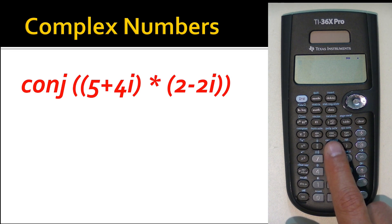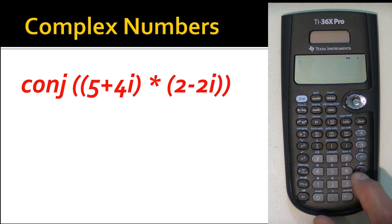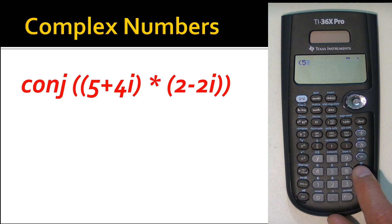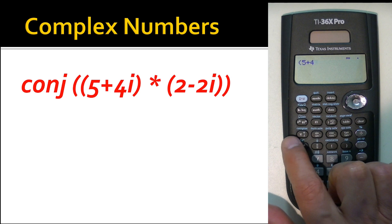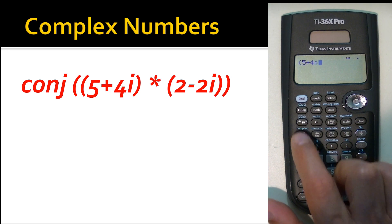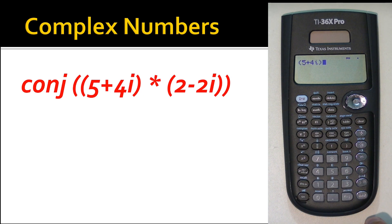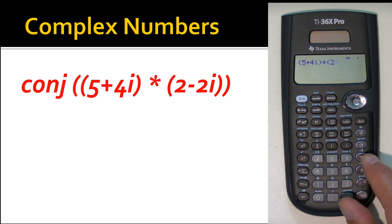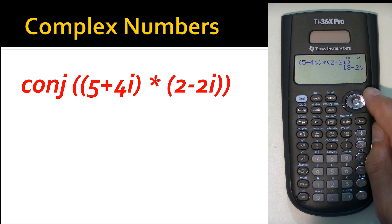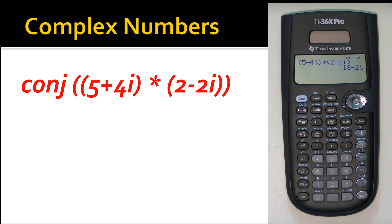Example: multiply (5 + 4i) by (2 - 2i). You don't need to activate a special function for the basic multiplication. Use parentheses to define each complex number clearly. Open paren, type five, hit plus, type four, then hit the pi key three times to get the imaginary unit i, close paren. Times, open paren, two minus two i, close paren. Hit Enter — the result is 18 minus 2i.